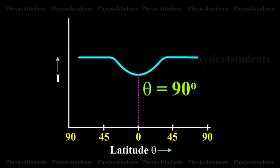The intensity is minimum at the equator where theta equals 0 degrees, and remains constant between latitudes of 42 degrees and 90 degrees.